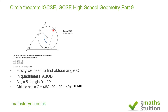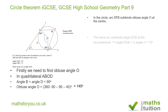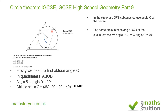We now need to work out the size of angle C at the circumference. The arc DFB subtends the angle O at the center. The same arc DFB subtends the angle C at the circumference. It then follows that angle C will be half the angle O, and angle C then becomes 70 degrees.